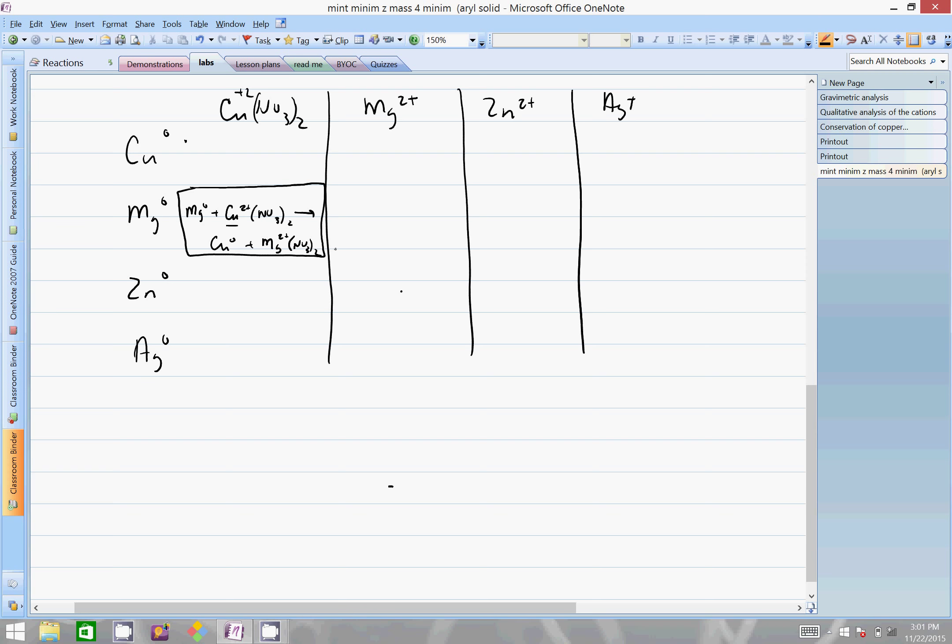It becomes copper metal plus magnesium 2+ nitrate. That's my reaction. This is one reaction, and the opposite reaction is actually right here. This guy is just the opposite. Rather than going from solid magnesium plus ionic copper ions, it's reversed. It's the ionic copper plus the Mg 2+, and this will yield copper 2+ and then the magnesium is the metal.